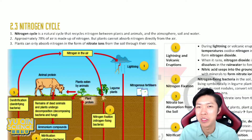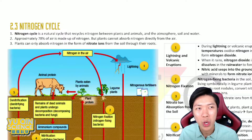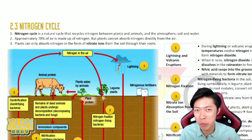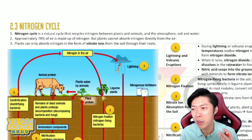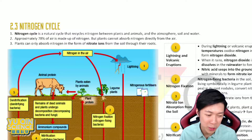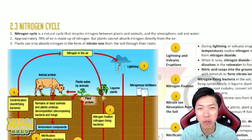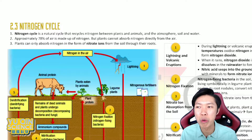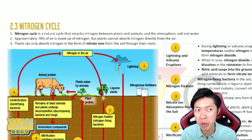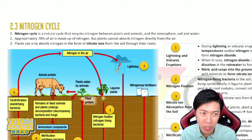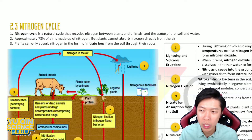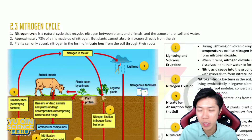Nitrogen Cycle is a cycle that is quite difficult to remember everything if you don't know the proper sequence or the proper flow of it. Nitrogen Cycle is a very important cycle, just like any cycle we have in Form 1 and Form 2 like Oxygen Cycle, Carbon dioxide Cycle. All these cycles are aimed to replenish the content of the gases in the air. You take something, you replenish.